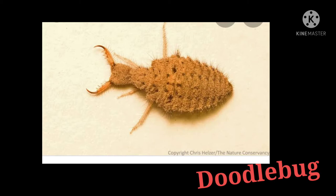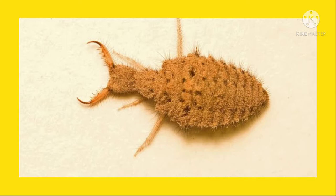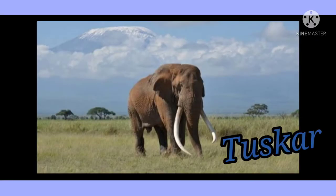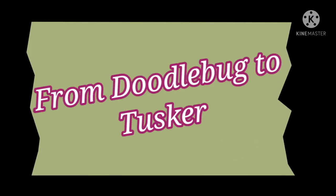What is meant by Doodlebuck? Doodlebuck means Kuliana. Have you ever seen a Doodlebuck? Where have you seen it? Usually Doodlebuck live in dry habitats. Next, Tusker. What is meant by Tusker? Tusker means Kumbanana. Our lesson's name is 'From Doodlebuck to Tusker', meaning Kuliana mudal Kumbanana varay.